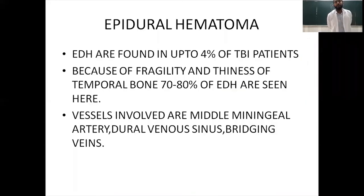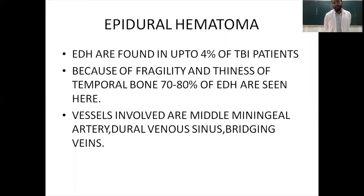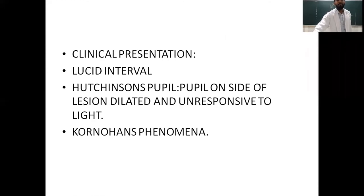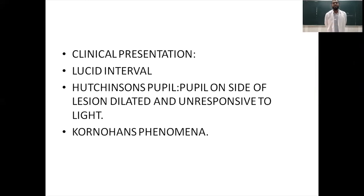Epidural hematomas are found in 4% of traumatic brain injury patients and mostly occur in the region of the temporal bone — a fragile and thin bone — accounting for 70 to 80% of cases. Vessels involved include the middle meningeal artery, dural venous sinuses, and bridging veins. The classic clinical presentation involves a lucid interval: the patient loses consciousness, regains it for minutes to hours, then loses it permanently. This is accompanied by the Hutchinson's pupil — the pupil on the side of the injury is unresponsive to light.